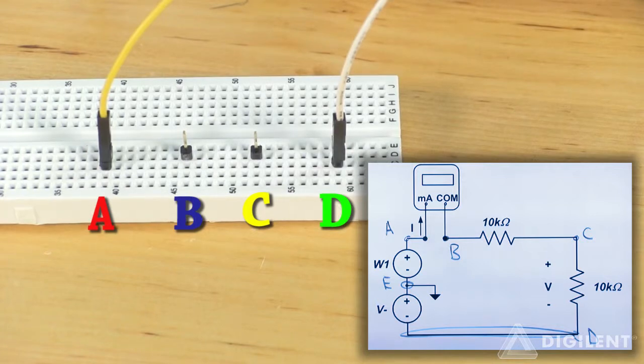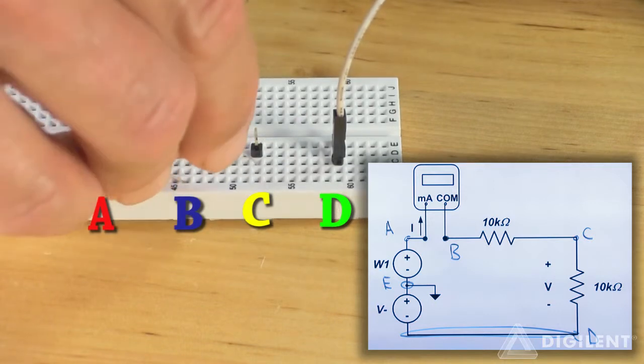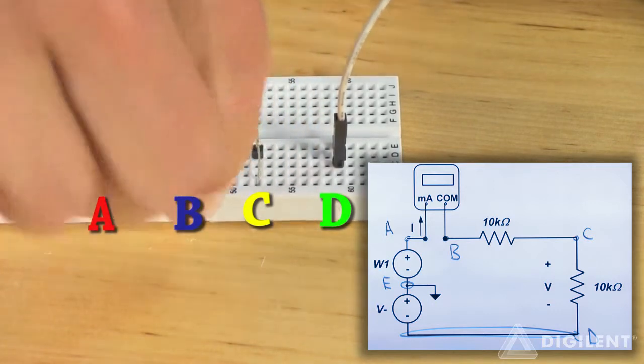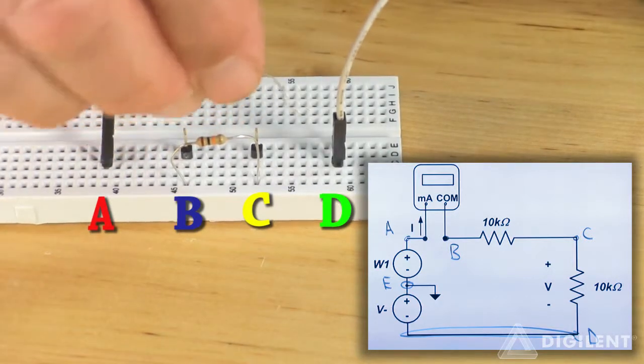Now I'll connect the resistors. One 10 kiloohm resistor goes between nodes B and C. The other one connects nodes C and D.